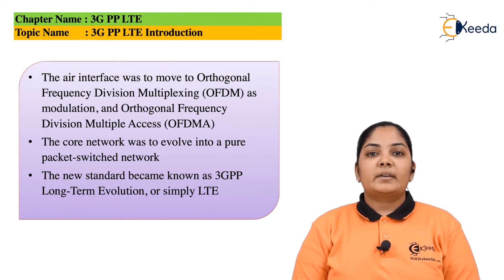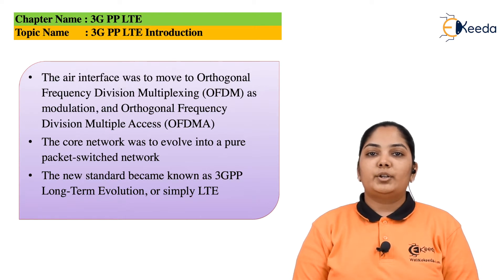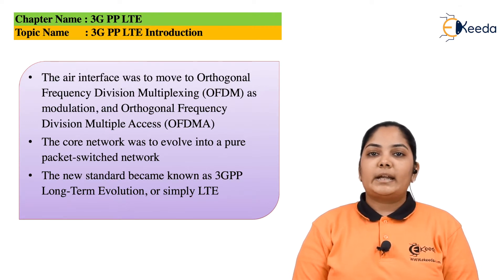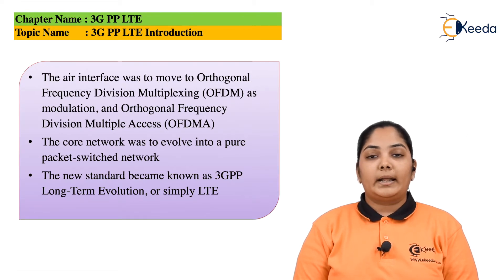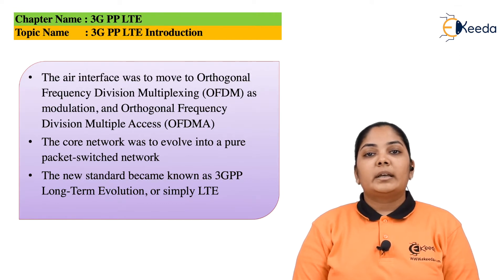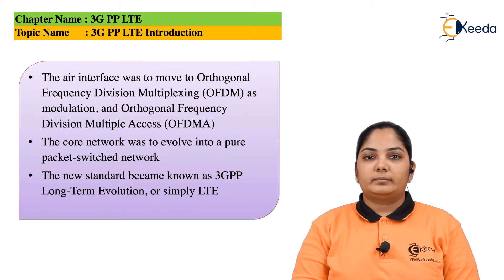The development of LTE originally took place in parallel to the evolution of WCDMA. Release 8 of LTE gave data rates up to 300 Mbps, and Release 10 of LTE, which is known as LTE Advanced, gave data rates up to 1 Gbps.